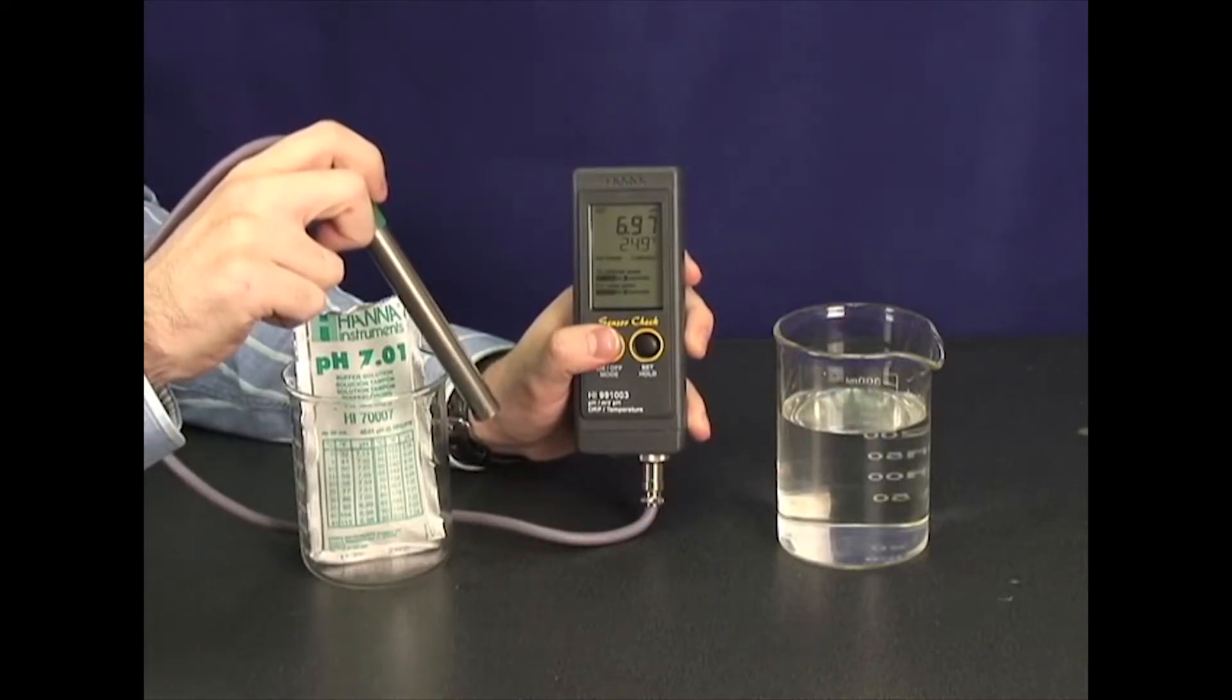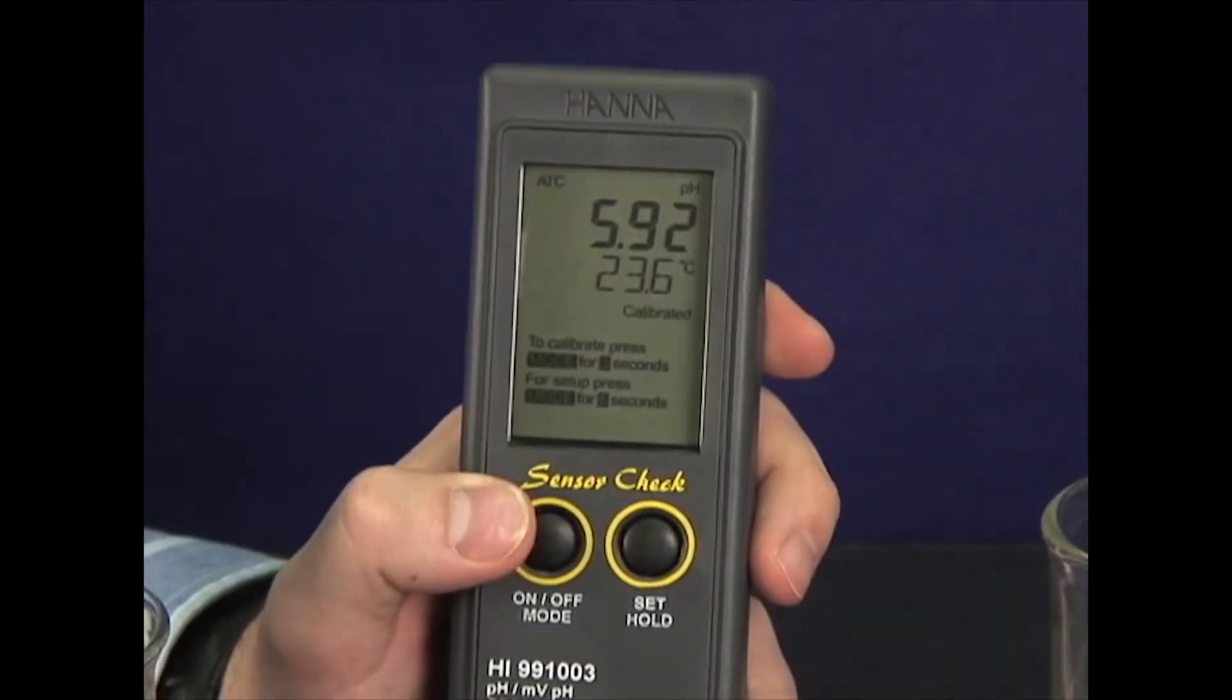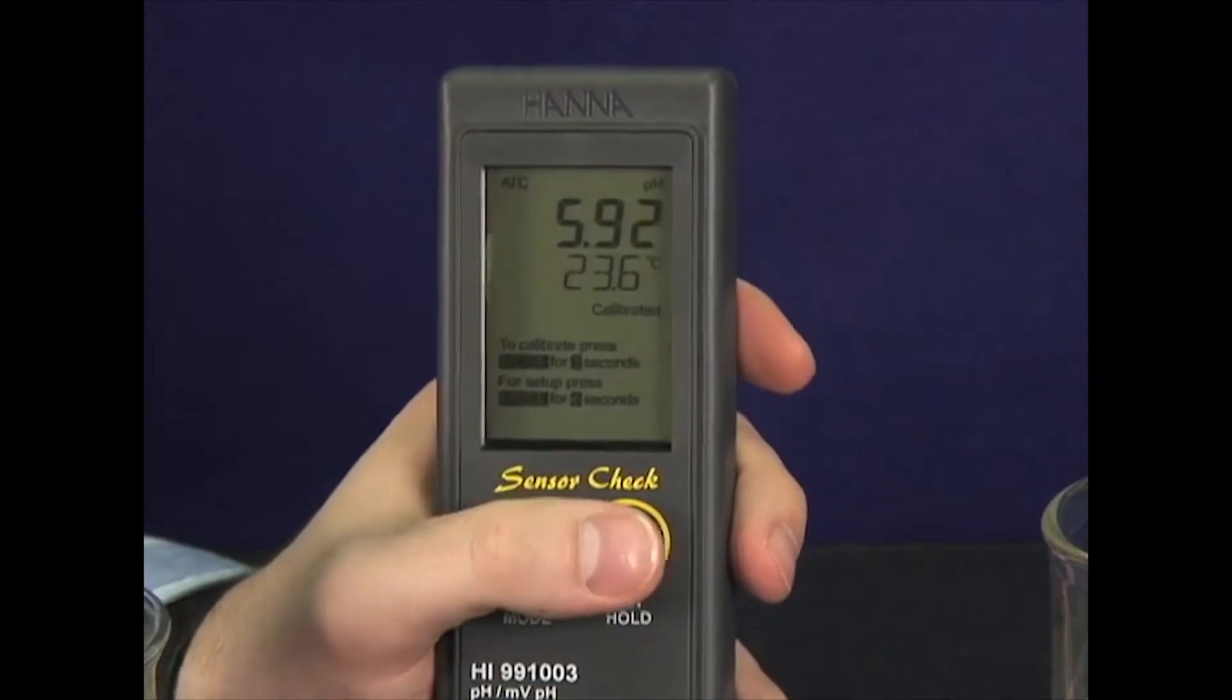Now that your meter is calibrated, just dip the electrode in the sample and you're done. The meter will give you a pH, millivolt, ORP, and temperature reading instantly.